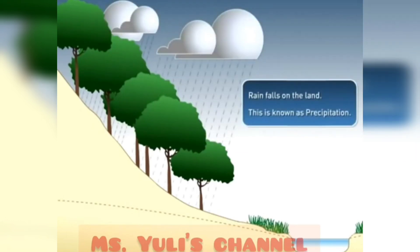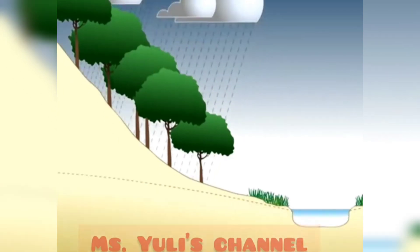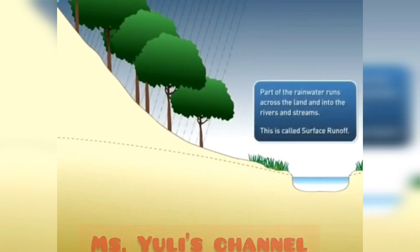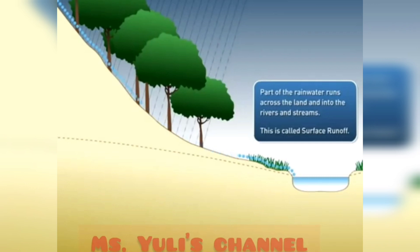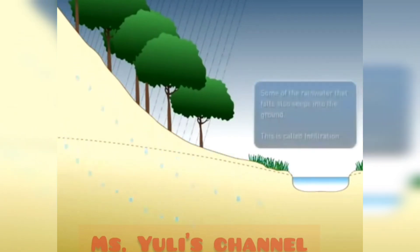When rain falls on the land, this is known as precipitation. Parts of the rainwater run across the land and into the rivers and streams. This is called surface runoff.